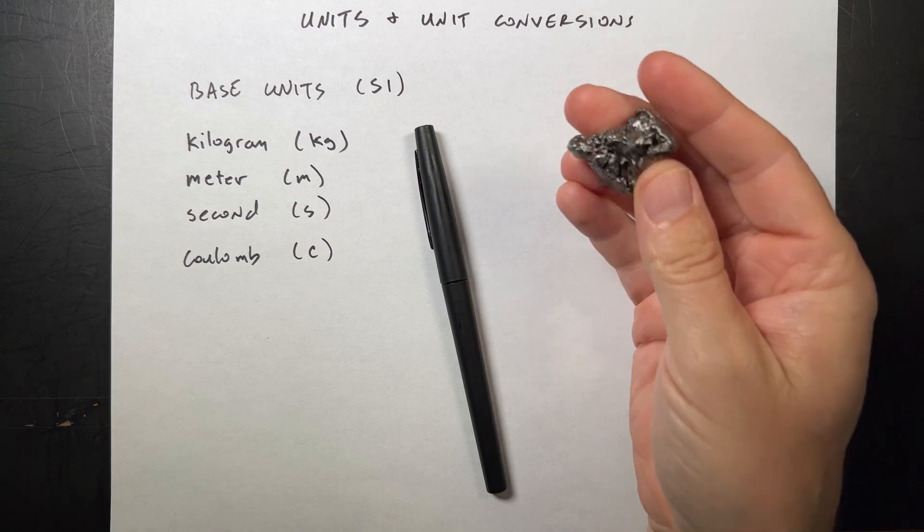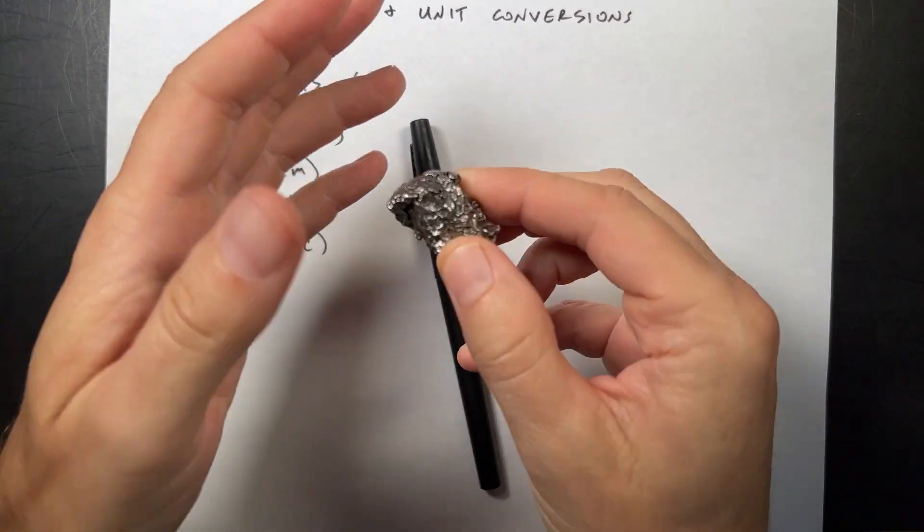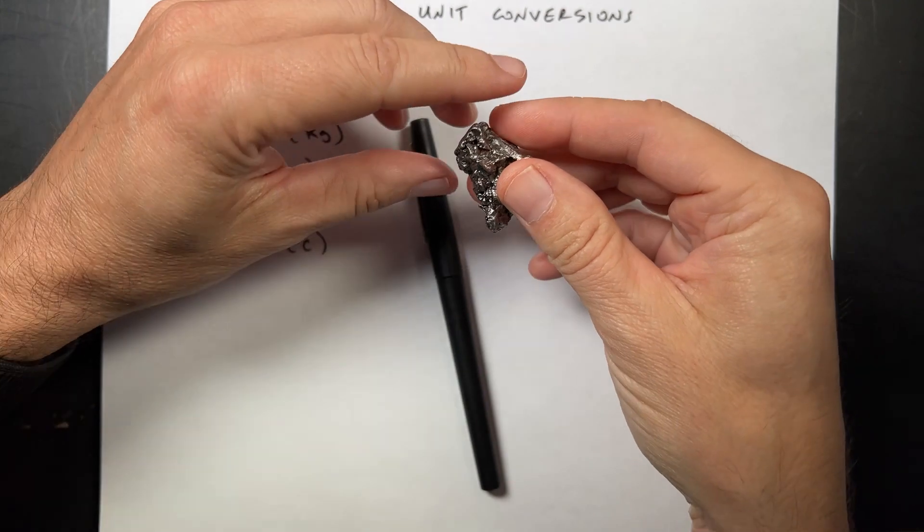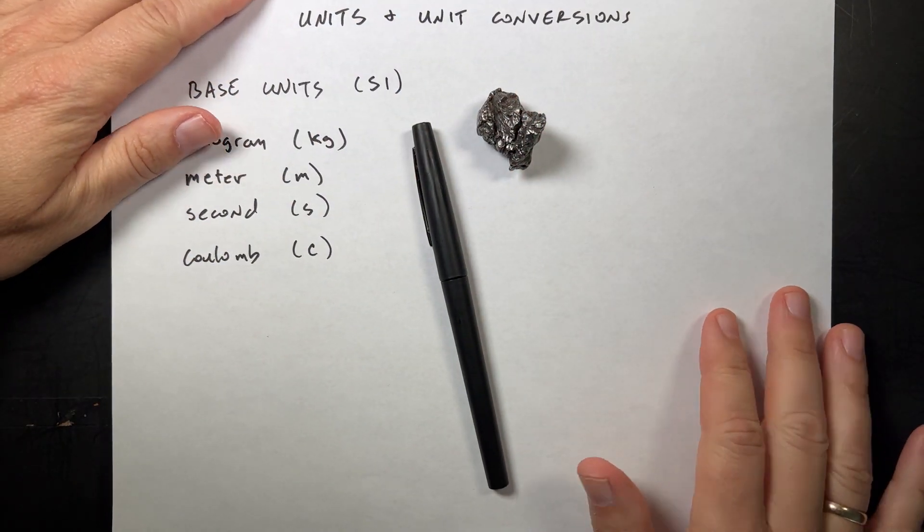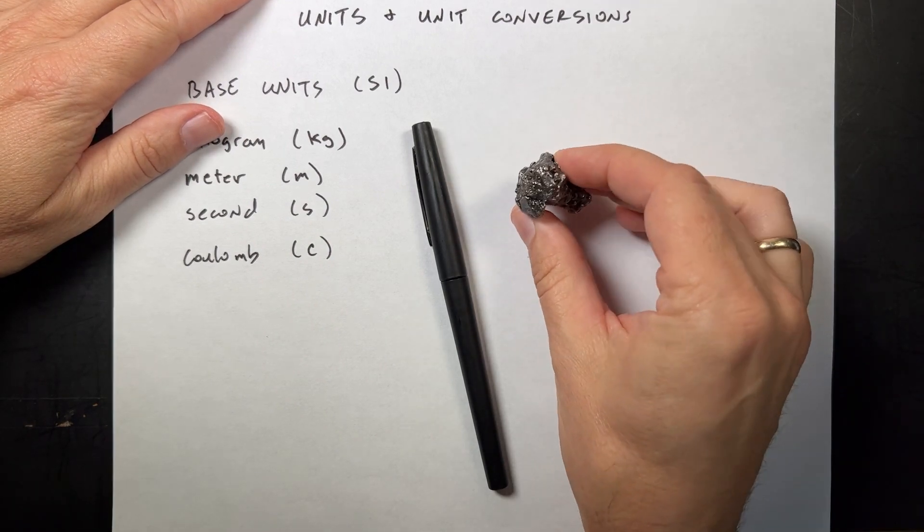You know, the first thing is, this is a meteor. I don't know if you knew that. Isn't that cool? Look at that. You can buy these online. They're not too expensive for something that big, and you should, because this thing came from space, and I think that's awesome.